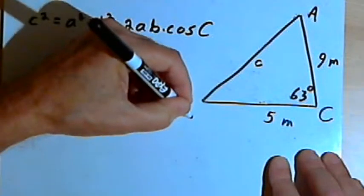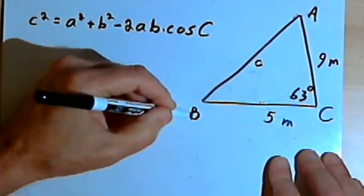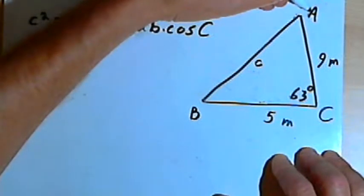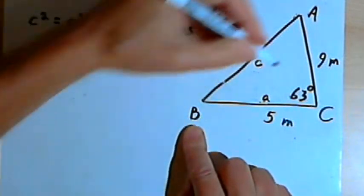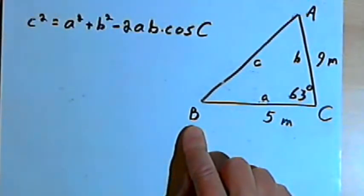The two remaining angles will be big A and big B. The side opposite angle A will be small a, and the side opposite angle B will be small b.